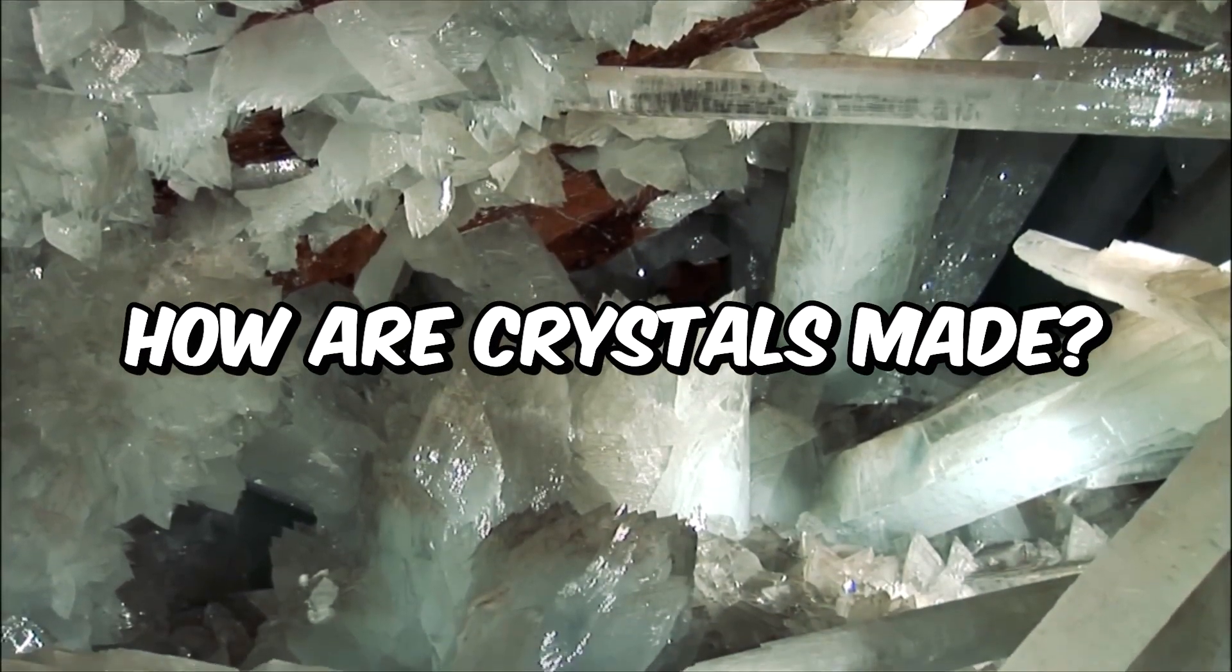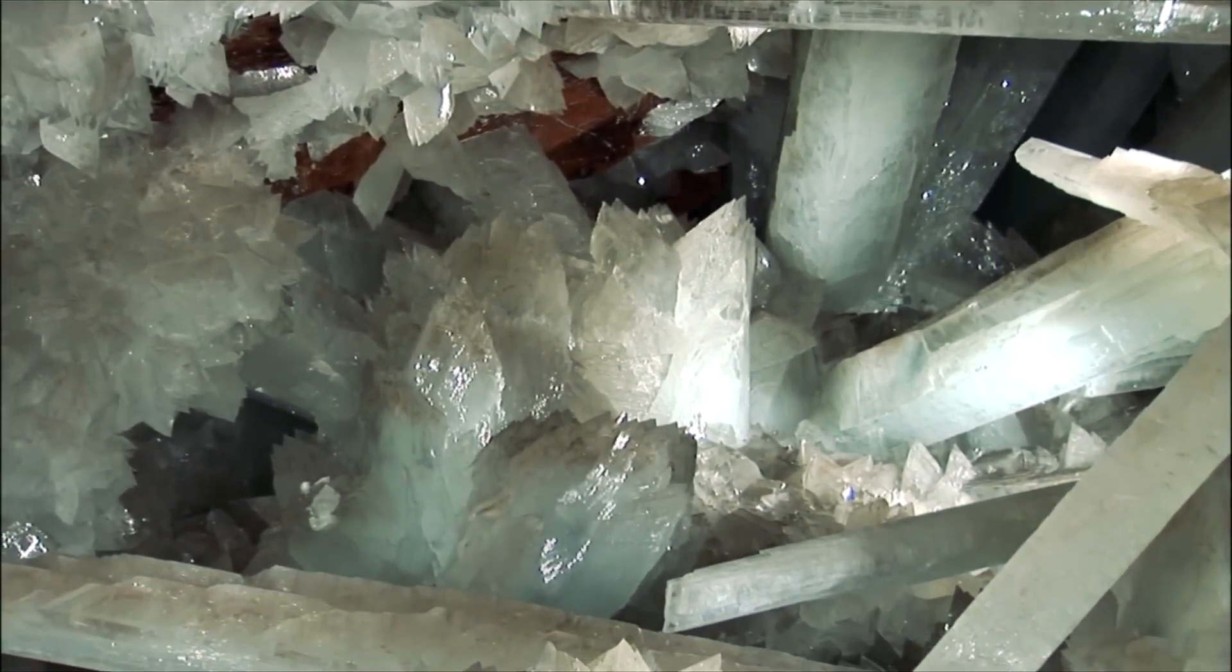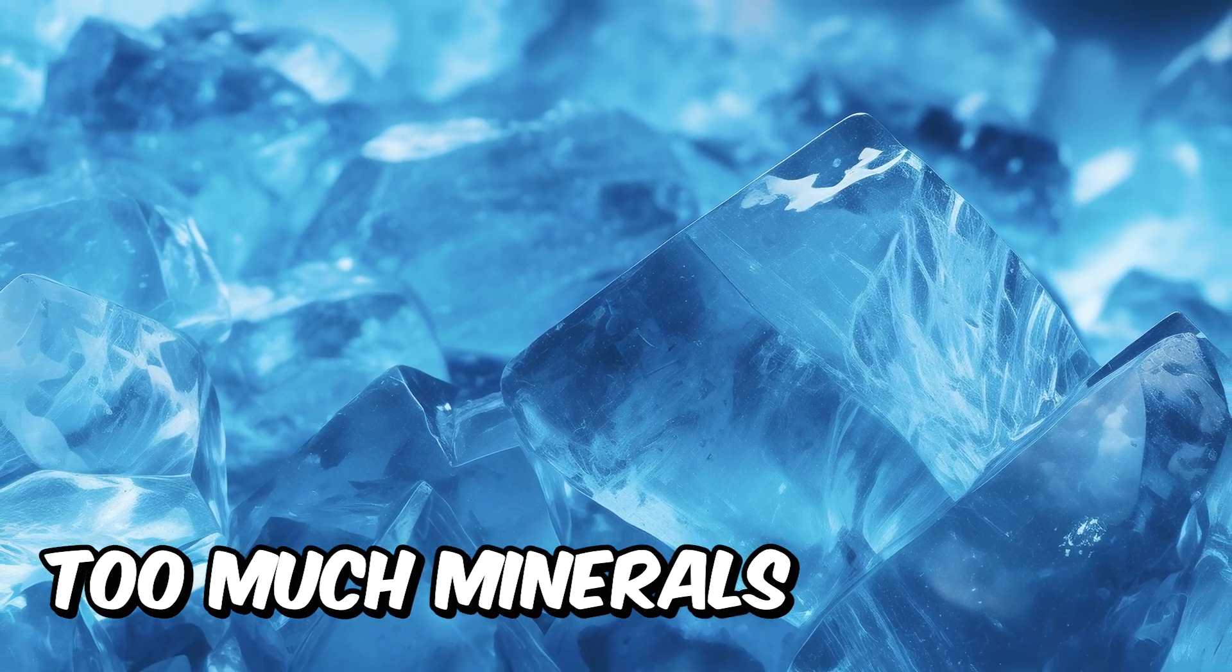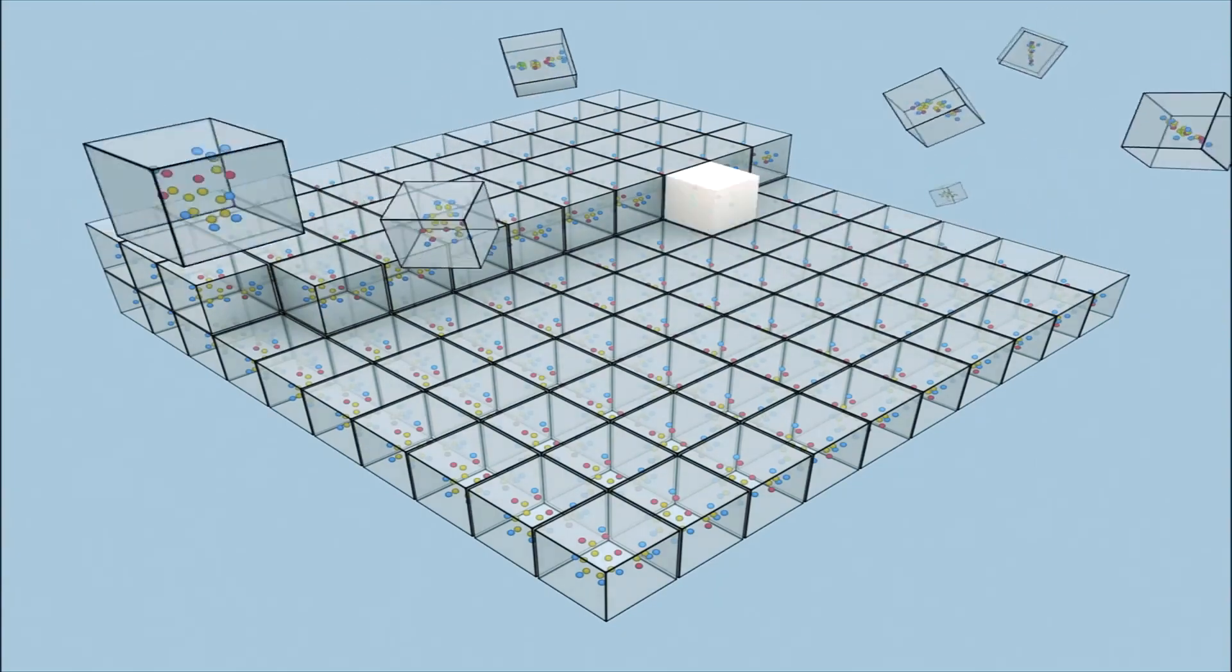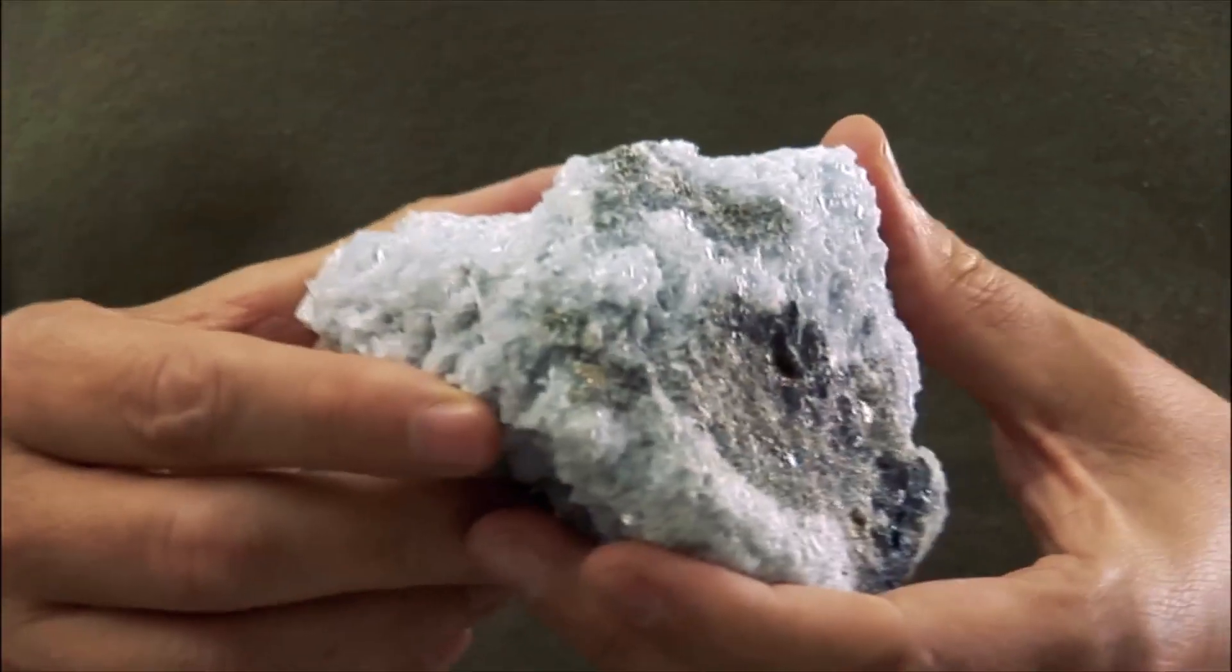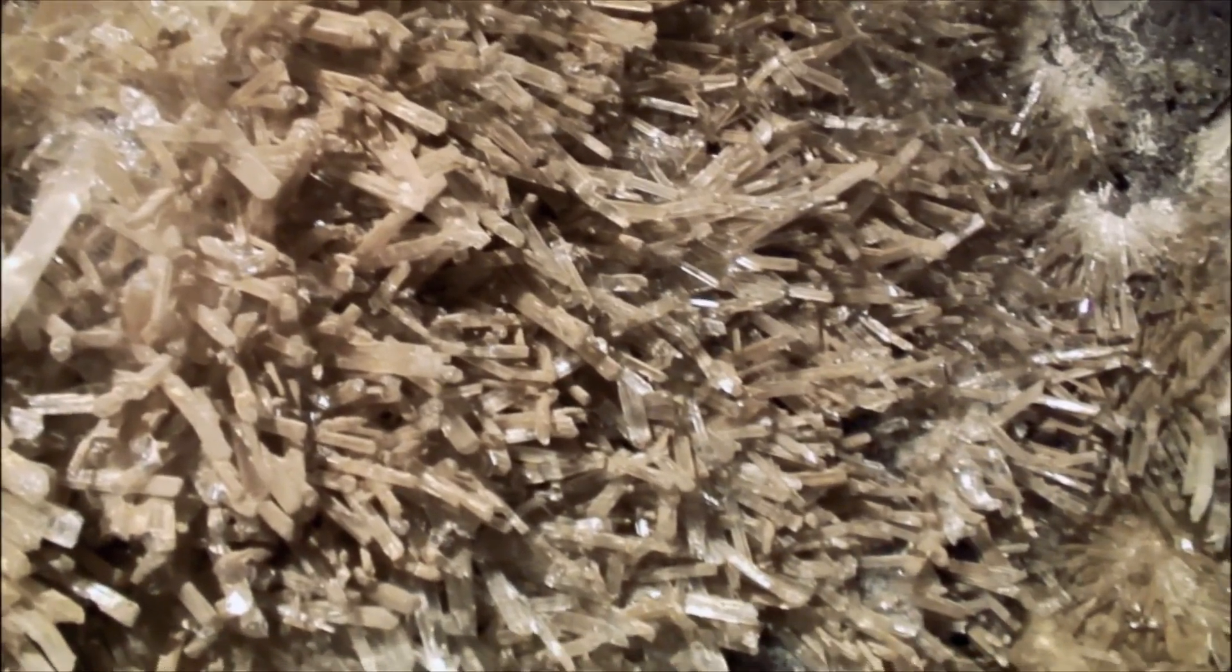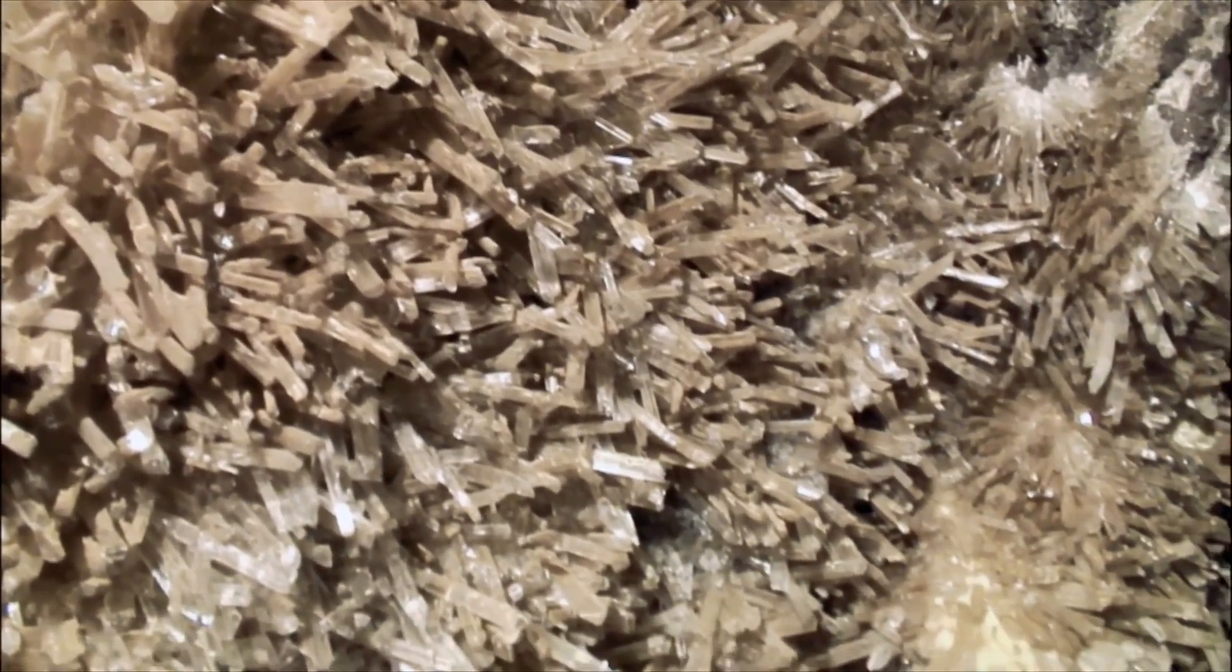How are crystals made? The heat allowed a large amount of minerals to dissolve in the water. In fact, the water contained more minerals than it could hold at that temperature. Over thousands of years, these minerals slowly came out of the water and turned into crystals. Because the cave was really hot and stayed at the same temperature for a very long time, it allowed the minerals to solidify into crystals.